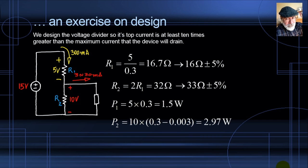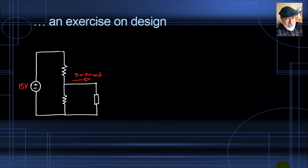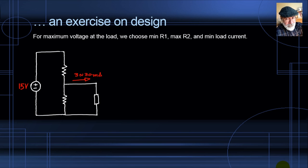During the device's duty cycle, its current changes between 3 and 30 mA, so the voltage will also shift. Resistor values carry ±5% tolerance. Under worst-case conditions for maximum voltage at the load, we choose minimum R1 = 16 − 5% = 15.2 Ω, maximum R2 = 33 + 5% = 34.7 Ω, and minimum load current of 3 mA.